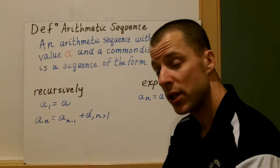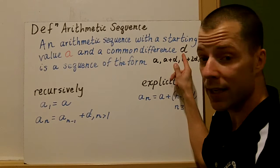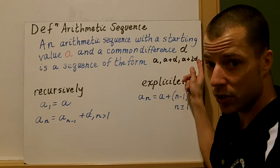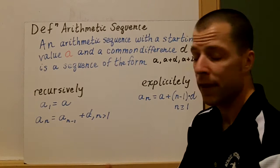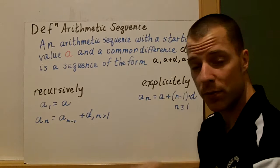An arithmetic sequence is a list of numbers with something special about them. An arithmetic sequence with a starting value of A and a common difference D is a sequence of the form: A, A plus D, A plus 2D, A plus 3D, and so on. There are two ways we can write arithmetic sequences — recursively or explicitly — and we talked about that in section one.